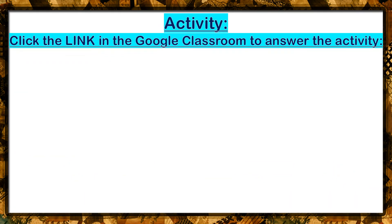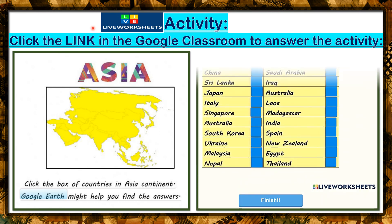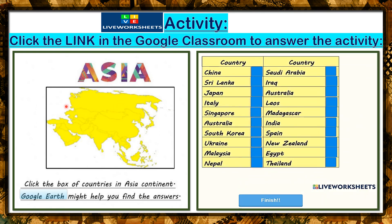Class, for your activity, please click the link in Google Classroom to answer the activity. Your activity is live worksheets. It looks like a map of the Asian continent, and you just tick — click the box of countries in the Asian continent. Google Earth might help you find the answer. Tick the country if you think that it belongs to the Asian continent. Good luck, everyone!